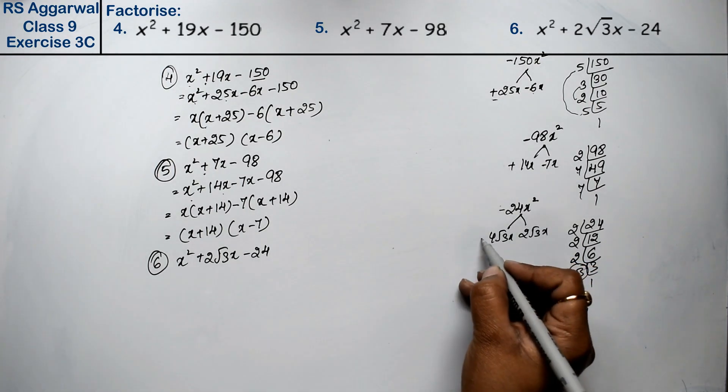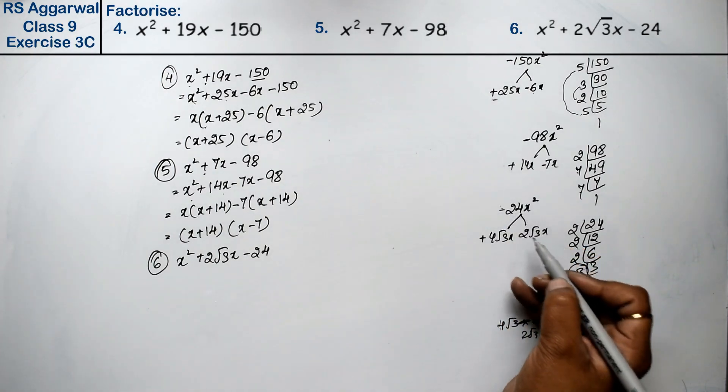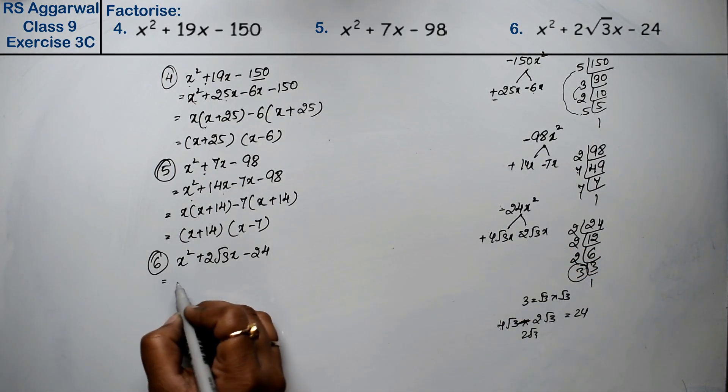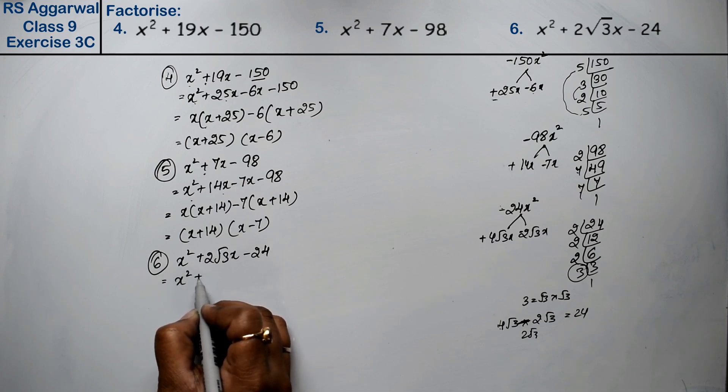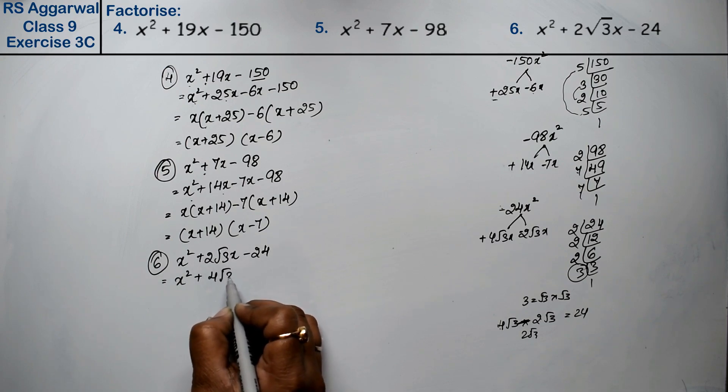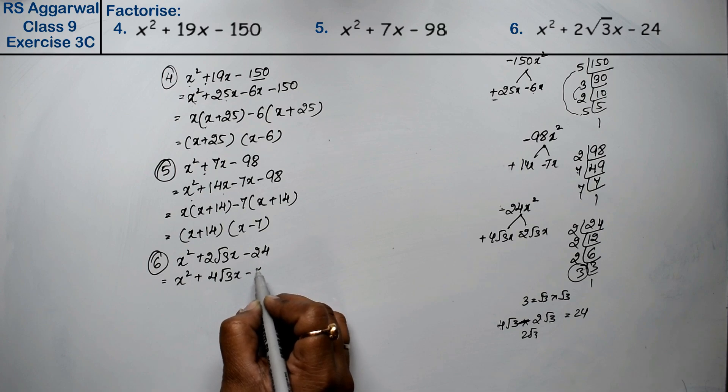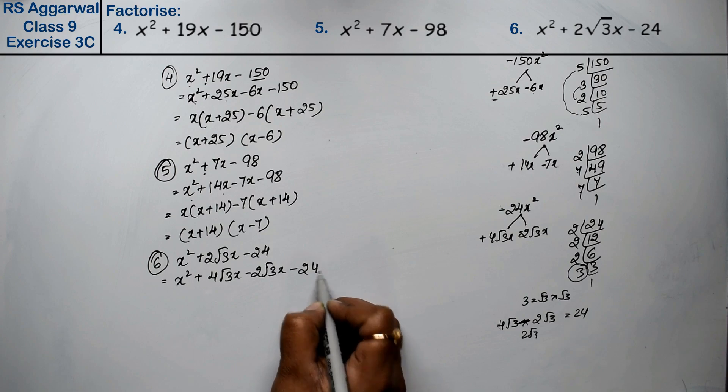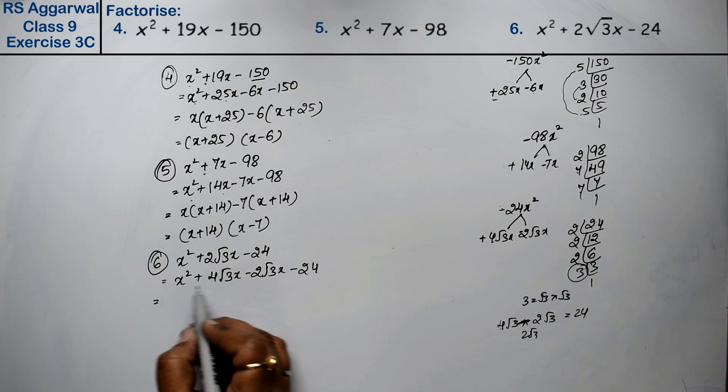Now this was plus sign, so this was bigger. This was minus, so this was minus. So see what happened: x square plus 4 root 3 x minus 2 root 3 x. Minus what happened? 2 root 3 times 2 root 3 is 12. Minus at home, then minus again.